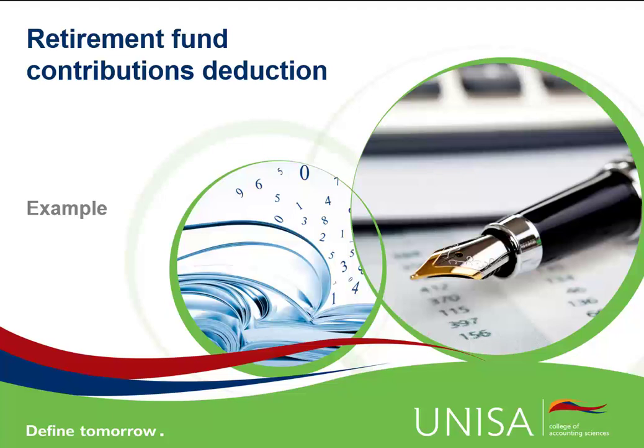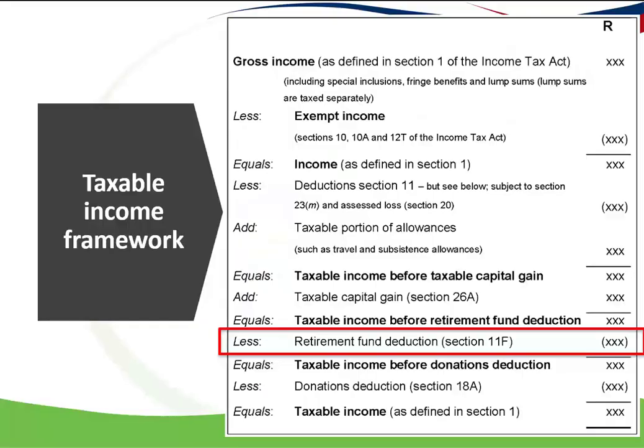I want to remind you that we are doing part of the taxable income calculation. In a longer question, you will have included all gross income amounts, exempted any income that is exempt in terms of specific sections, deducted the other section 11 deductions and the assessed loss, and added the taxable portion of the subsistence allowance and the travel allowance.